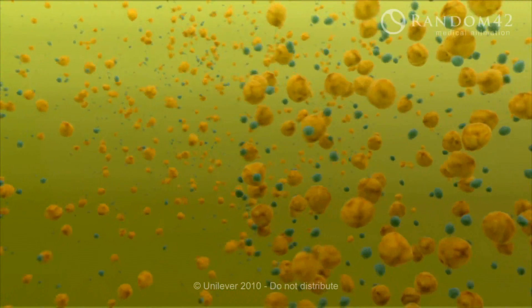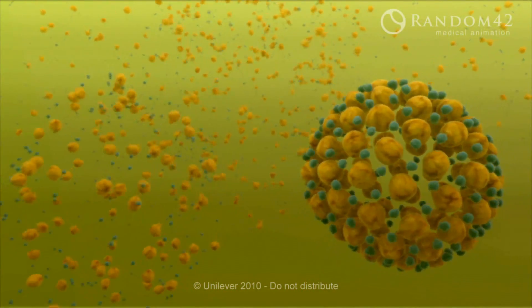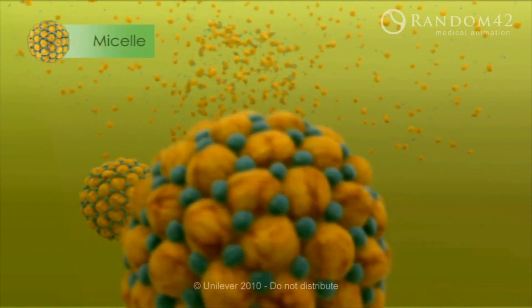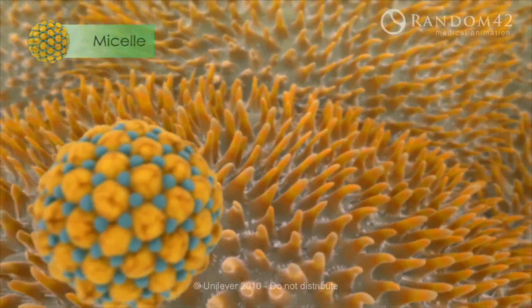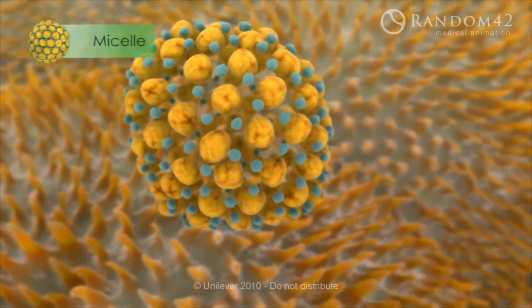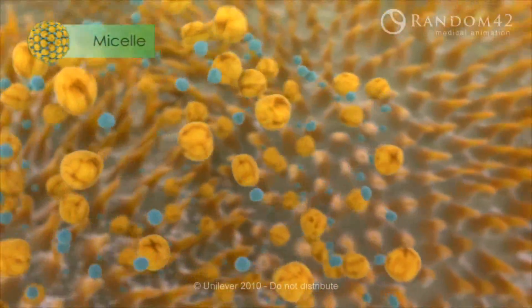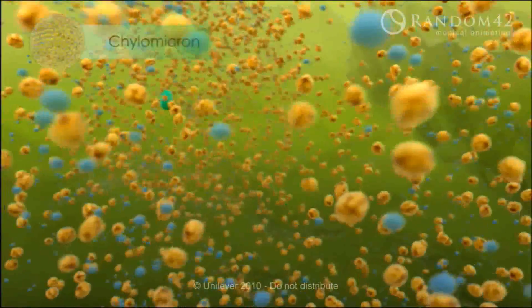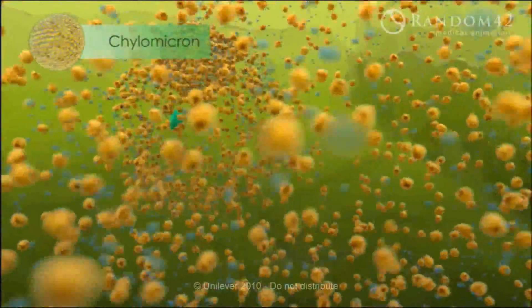In order to be absorbed from the gut into the bloodstream, cholesterol mixes with bile salts, fatty acids, lecithin, and triglycerides to form tiny water-soluble packets called dietary mixed micelles. The micelles then make contact with the intestinal cell wall, where their contents are taken up into the cell.